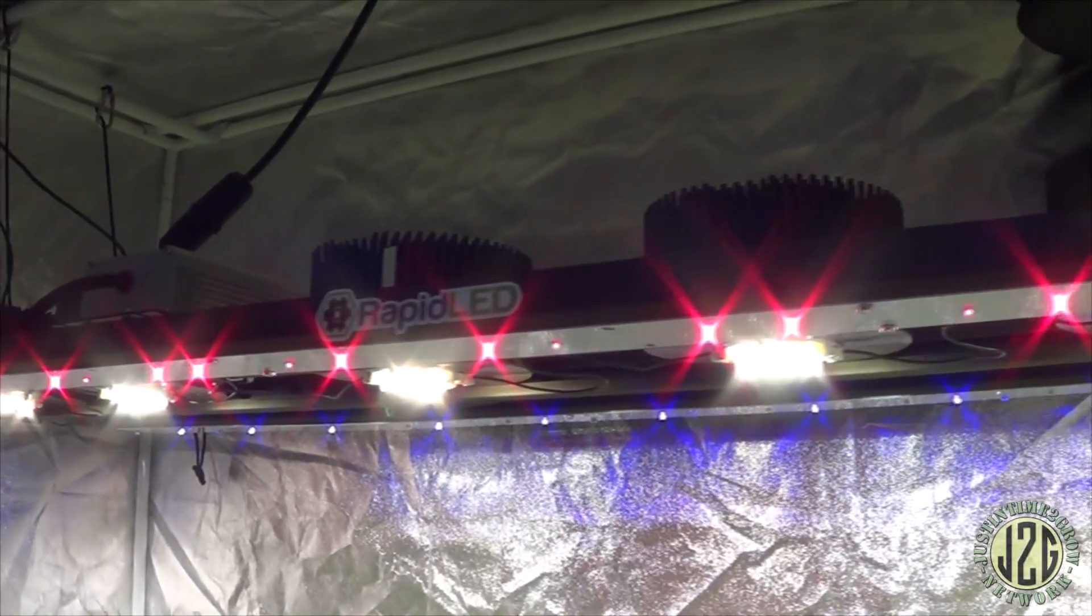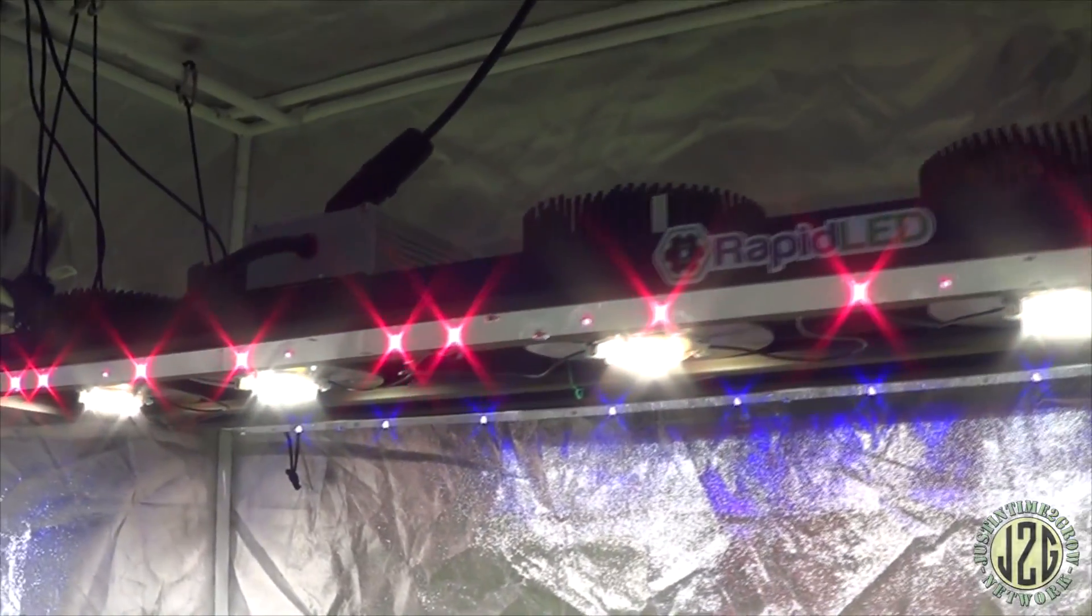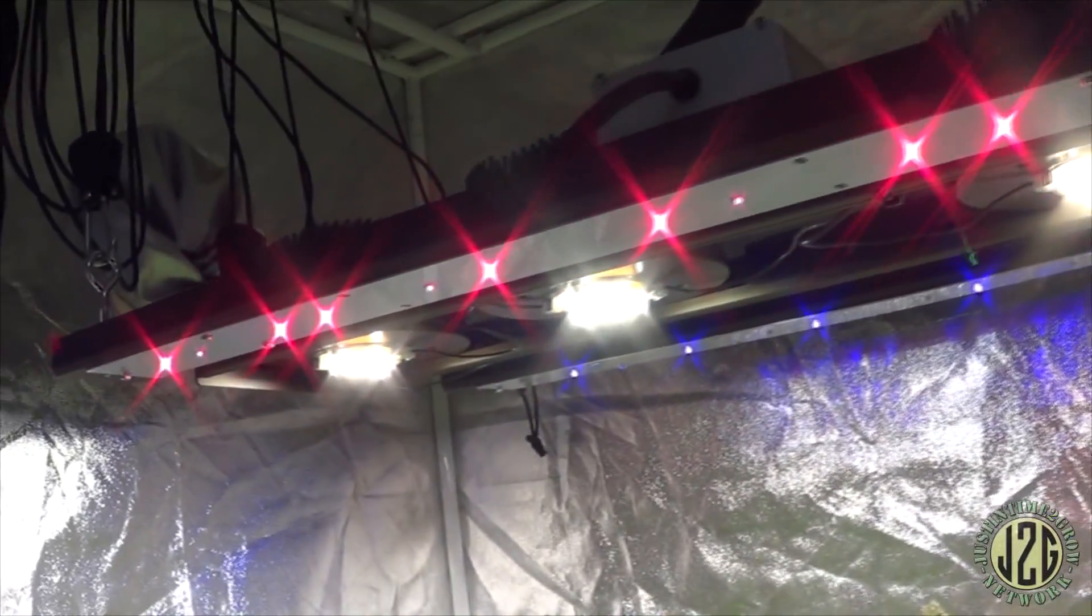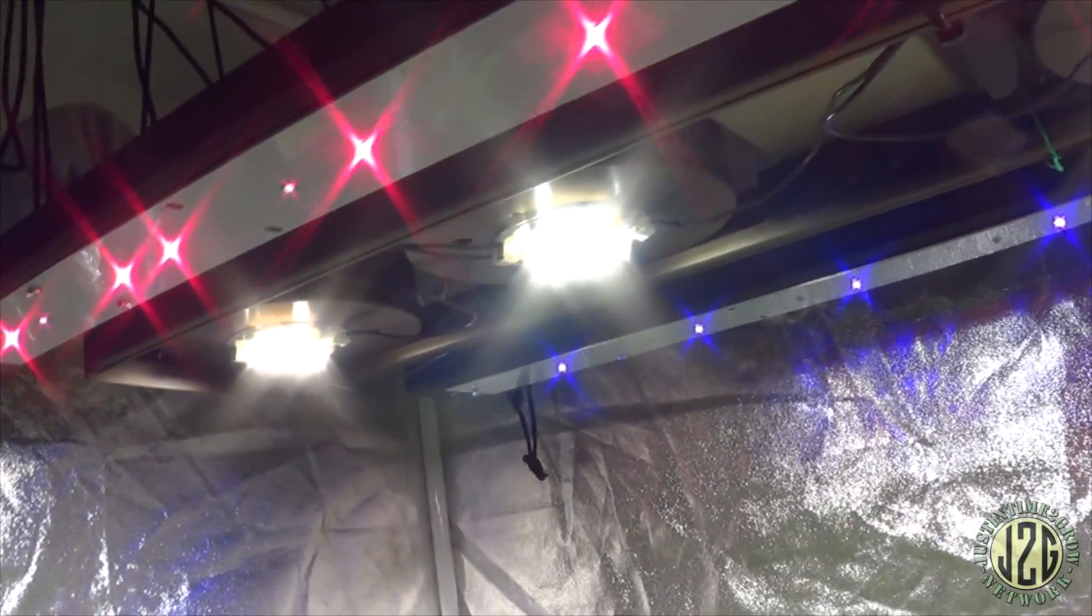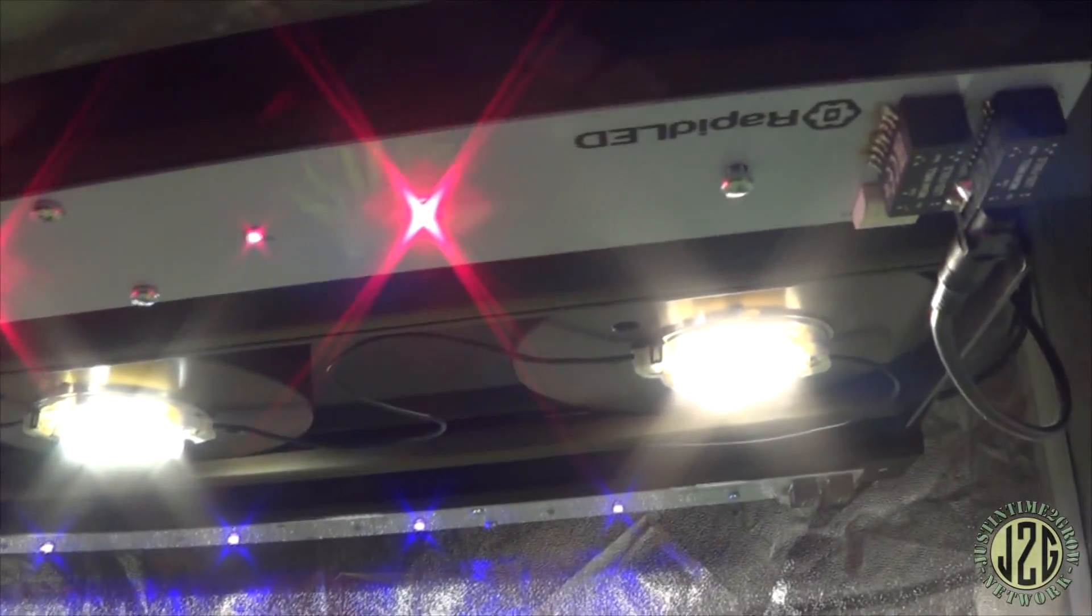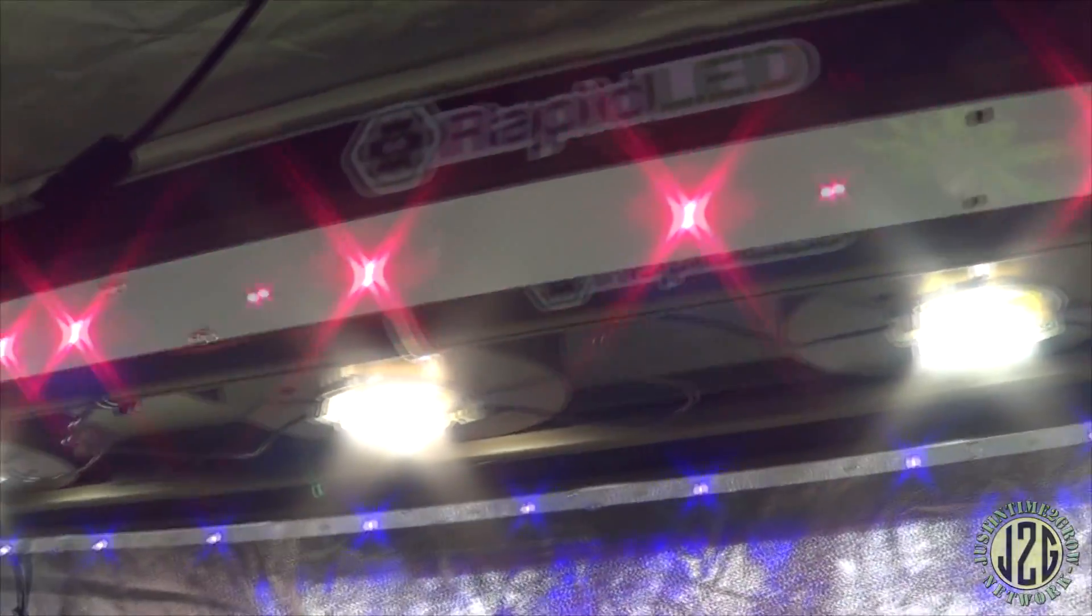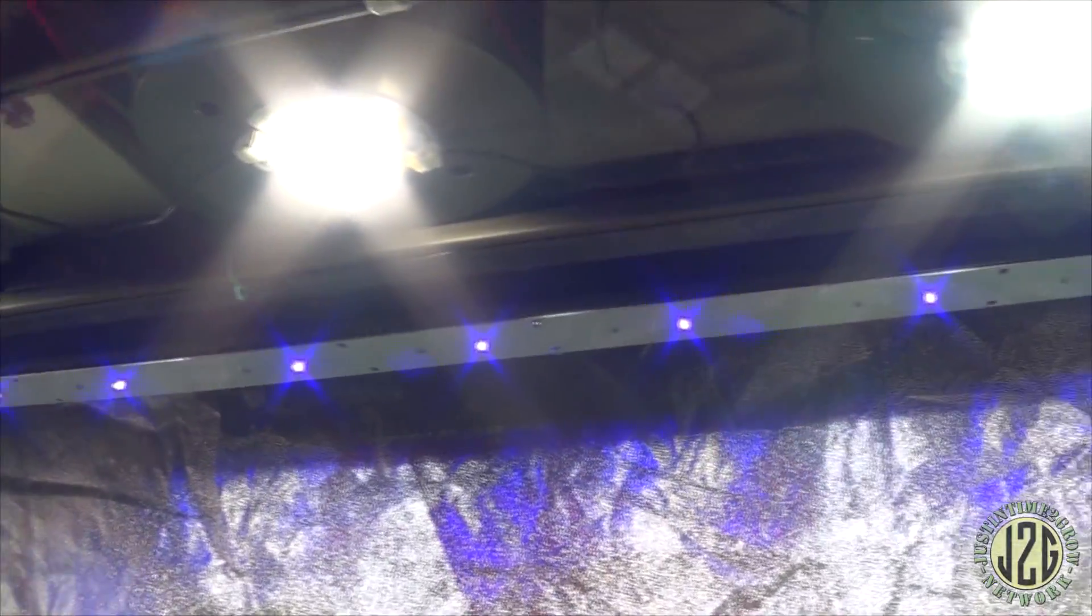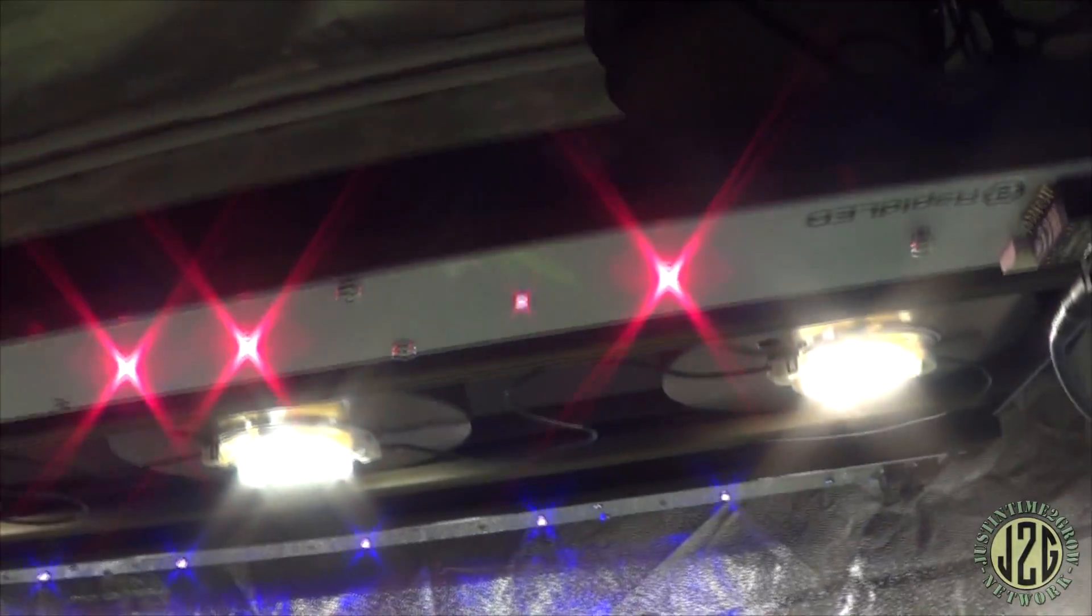Okay, so here's the fanless Rapid LED setup that I have. It's got the five COBs, Cree COBs, down the middle, and then a strip of far red and then a strip of infrared and UV supplemental on the side.